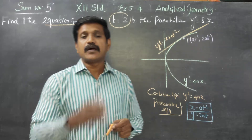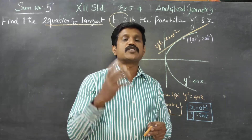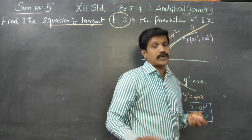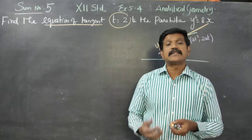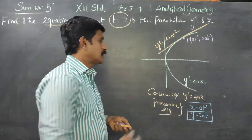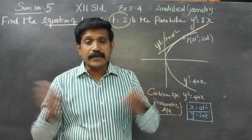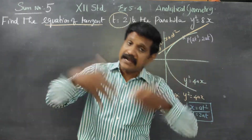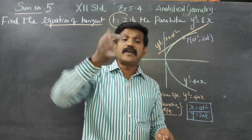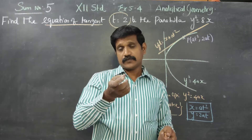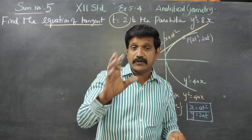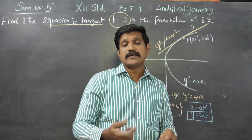For any conic — ellipse, circle, parabola, or hyperbola — there are two types of representation. One is called the Cartesian equation, where x and y have a direct relationship. The other is the parametric equation, where a third independent variable, the parameter t, links x and y.